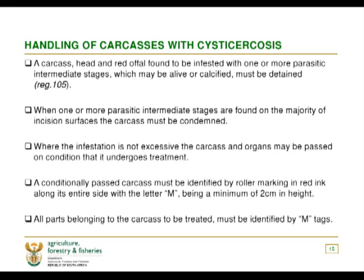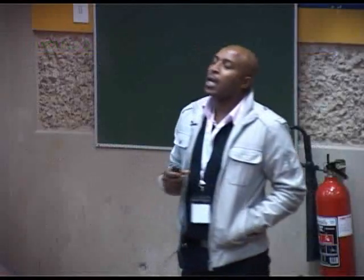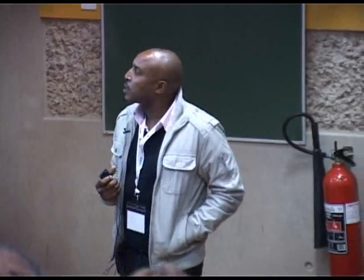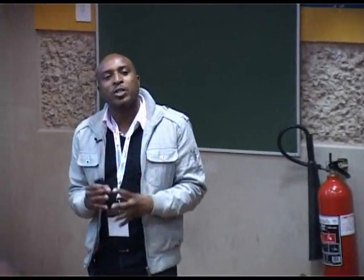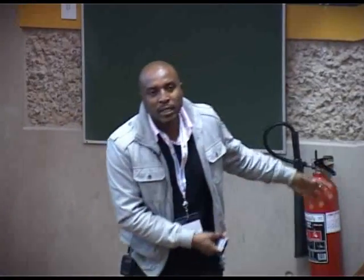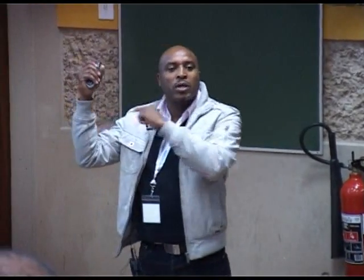A conditionally passed carcass must be identified by a roller marking in red ink along its entire side with the letter M, being a minimum of two centimeters in height. All parts belonging to the carcass to be treated must be identified with M tags. In abattoirs, if there is no proper correlation between carcasses and organs, you may find that the organs have already been taken away and sold — that is a loophole. Sometimes it is not the meat inspector's fault; it may be due to interference by the abattoir owner. That is why meat inspection must be independent.